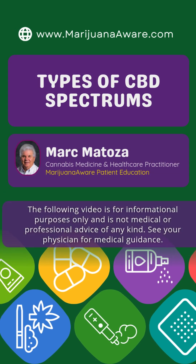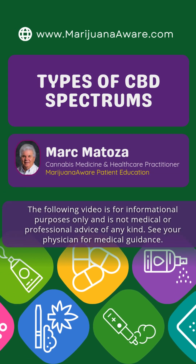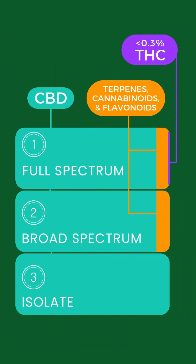Let's talk about the various types of CBD spectrums. There are CBD isolates, which contain the CBD cannabinoid. There's broad spectrum, which contains not only the CBD cannabinoid, but also other terpenes, cannabinoids, and flavonoids.